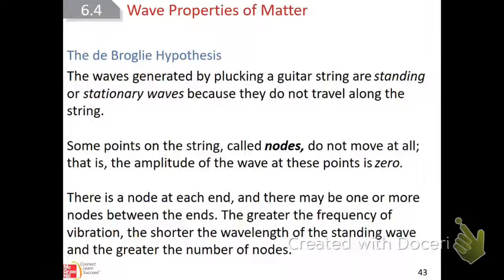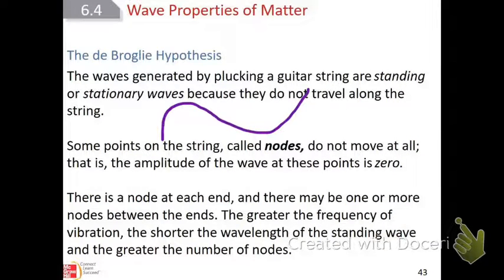De Broglie says that the waves generated — if you think about a guitar — can be thought of as standing or stationary waves. If you pluck a string or even a rubber band, that wave looks like it's just vibrating back and forth standing still. That's called a standing wave, because it doesn't travel up and down the spring.